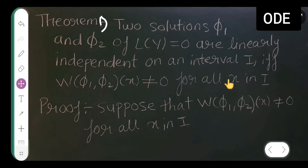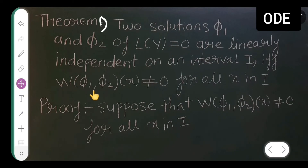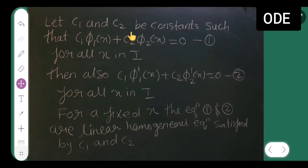Since there is an if and only if statement, we need to prove the converse part as well. First, suppose that W(phi 1, phi 2)(x) ≠ 0 for all x in I. Let c1 and c2 be constants such that c1·phi 1(x) + c2·phi 2(x) = 0 — call this equation (1) — for all x in I.